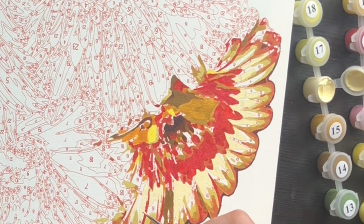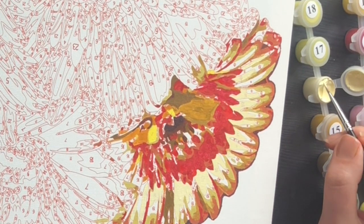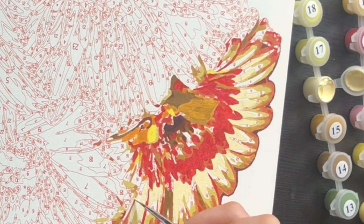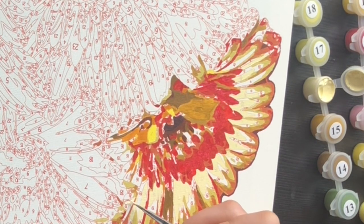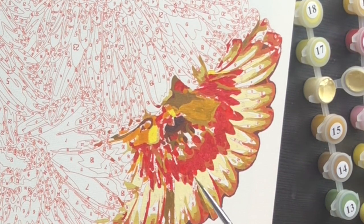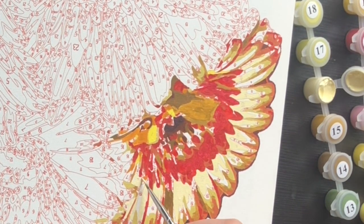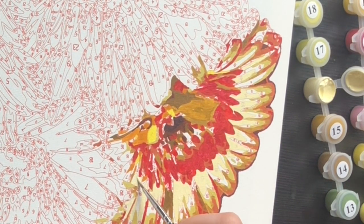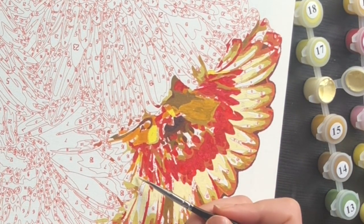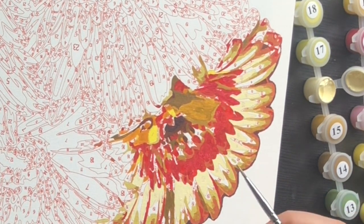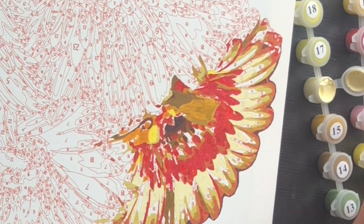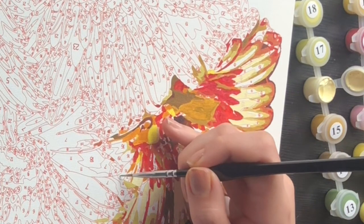So this color number 16, the light yellow, is most of the petals actually in this flower. So I think I feel like I made a lot of progress in today's video just by doing this color. Now the flower is mostly complete. Well, not quite, but yeah, now it feels like it's getting there.